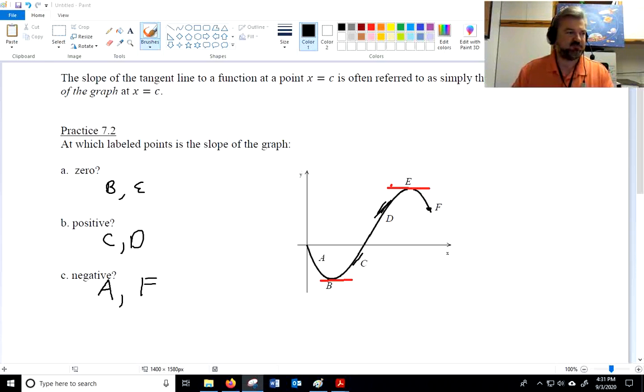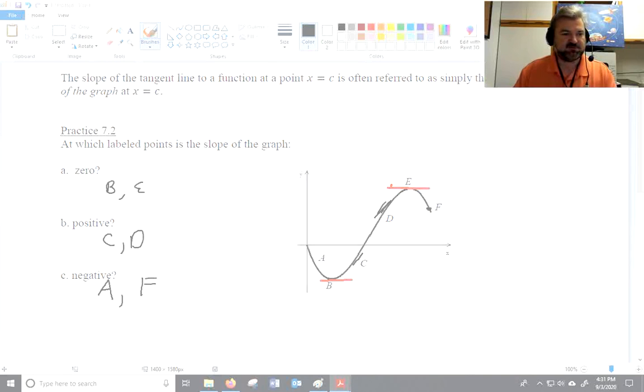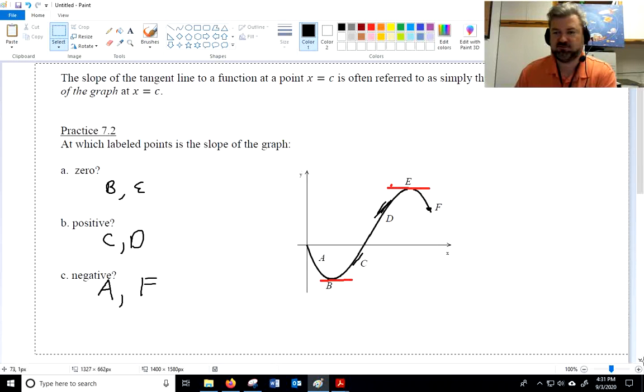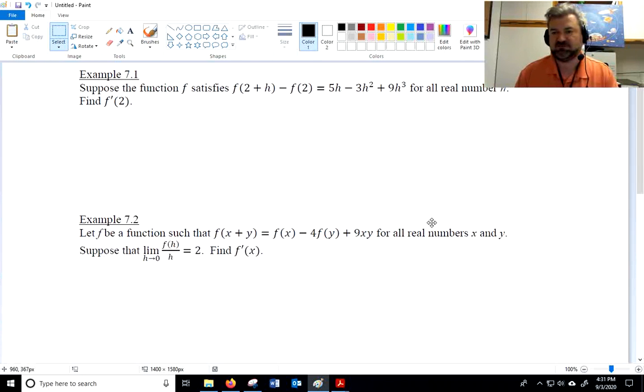Alright. Next, we have a couple problems for me to do with you. So these are kind of classic problems from the AP exam. It's a good way to test your knowledge of the definition of the derivative. So let's take a look. Suppose the function f satisfies that f of 2 plus h minus f of 2 is equal to 5h minus 3h squared plus 9h cubed for all real number h. Find f prime of 2. So all we have is this rule about how f behaves when you add something to it. So we can't use a graph. We can't use any of the kind of shortcuts that we'll try and learn throughout the year. We have to go back to the definition of the derivative.